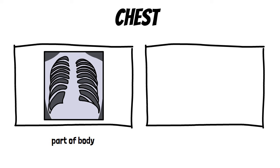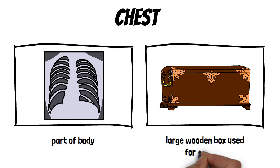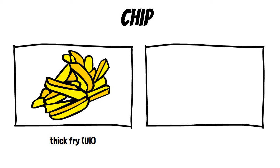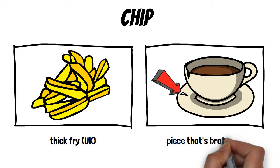Chest: the first meaning is a part of the body, and the second is a large wooden box used for storage. Chip: the first meaning is a thick fry in the UK, and the second is a piece that's broken off something.